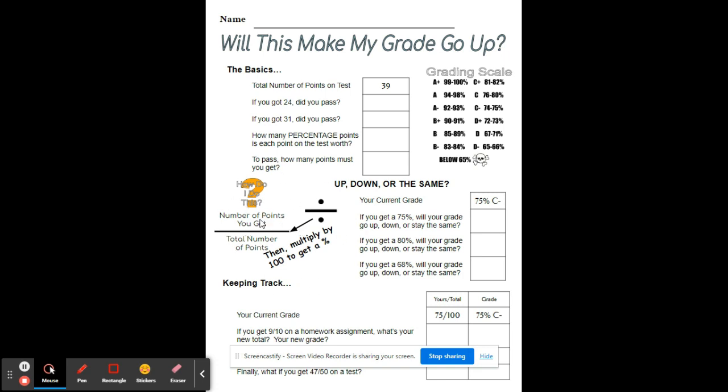You take the total number of points you got divided by the total number of points possible, and then once you've got that, multiply it by 100 and then you'll get a percent. Alright, so first,